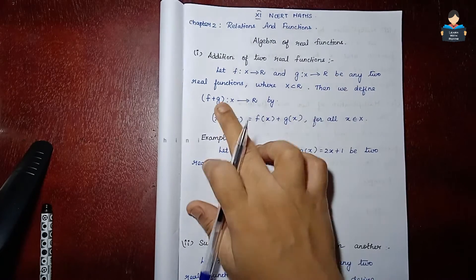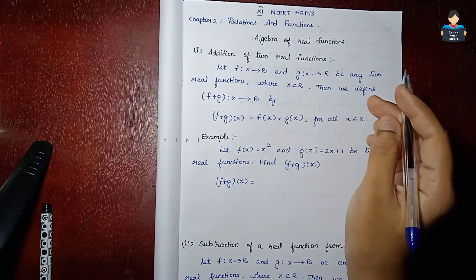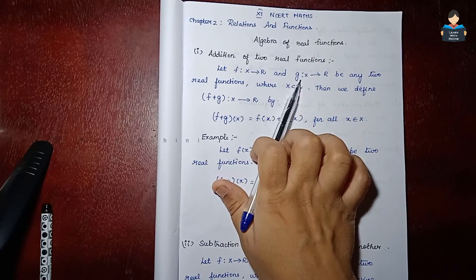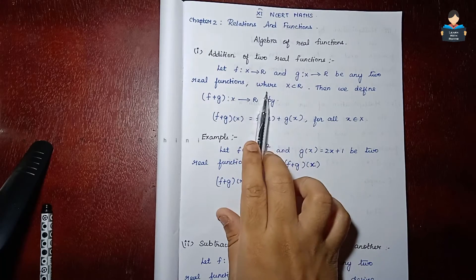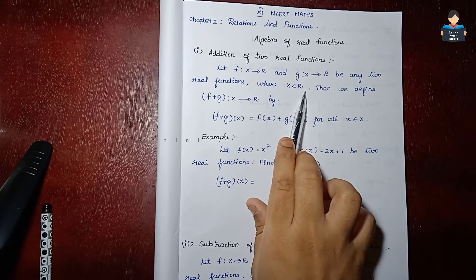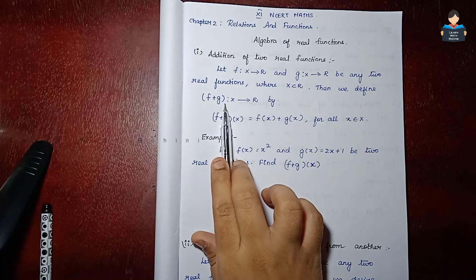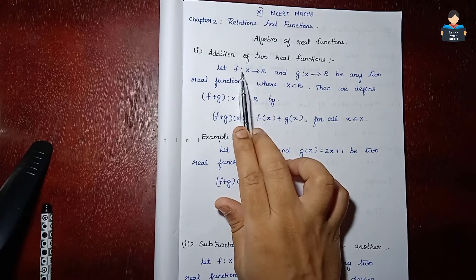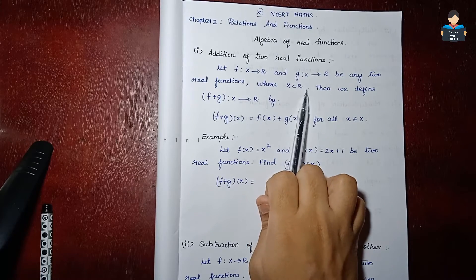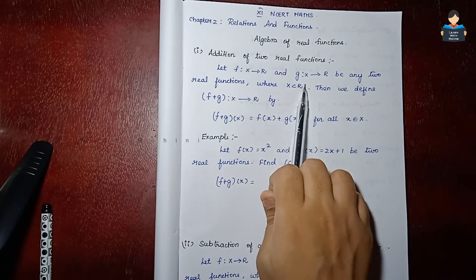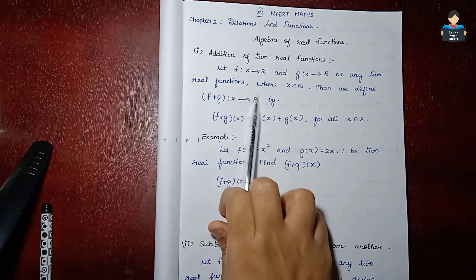The first topic is Addition of Two Real Functions. Let f and g be any two real functions such that x is a subset of r (real numbers). Then we define f plus g as a function from x to r.